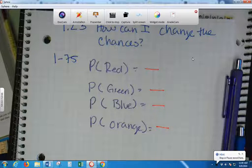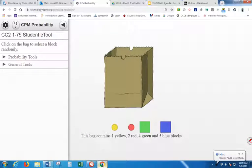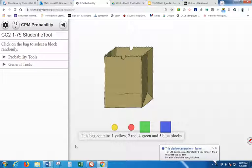Now, let me show you what it is because I'm not going to hand you the bag. If I go here, this is our bag. And it says right there, this bag contains one yellow, two red, four green, and five blue blocks.